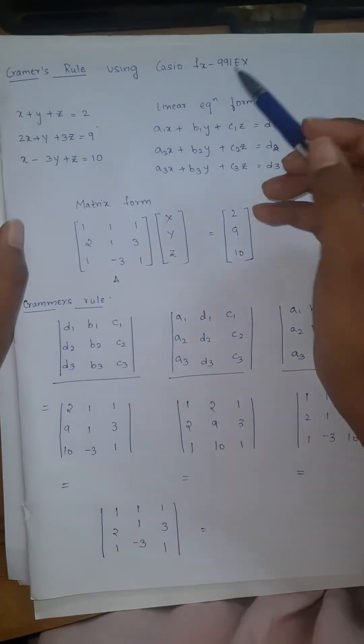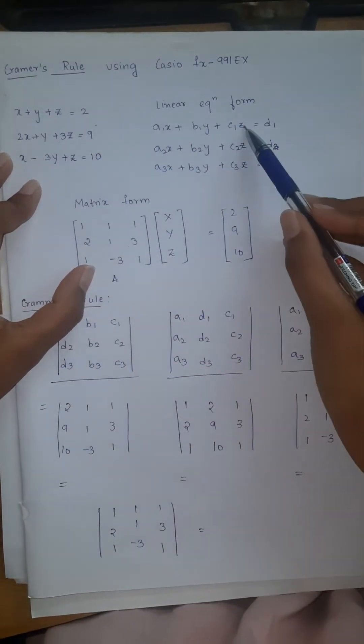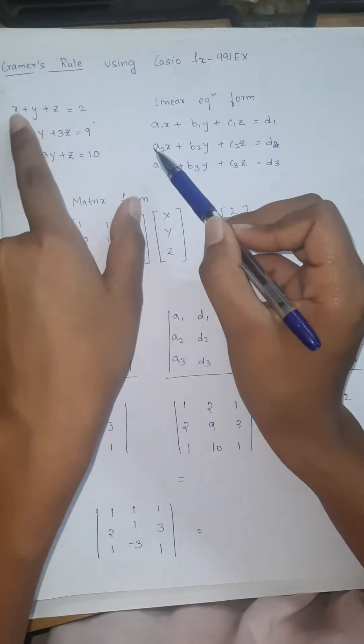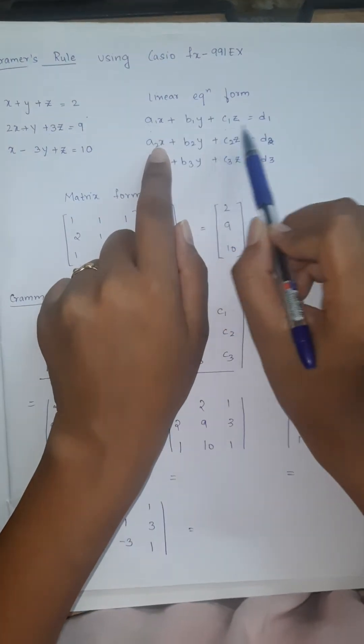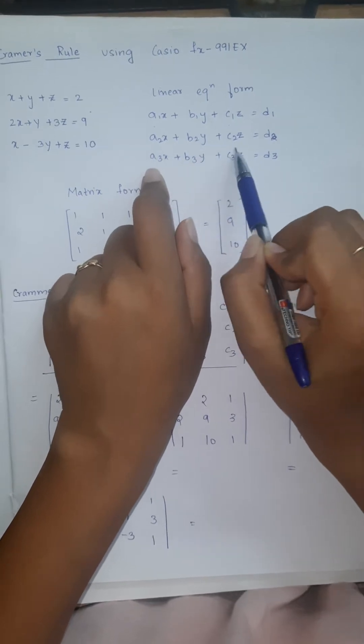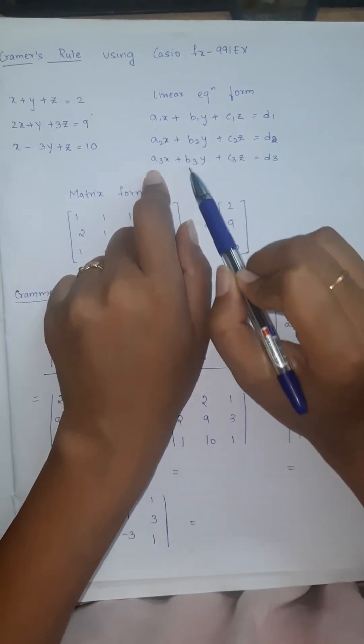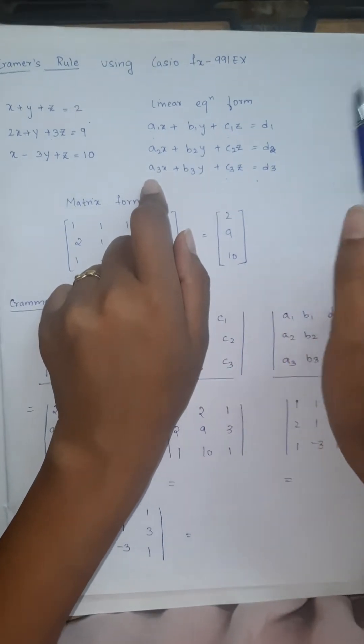First, this is the linear equation form. These equations are in the form of A1X plus B1Y plus C1Z equals D1, A2X plus B2Y plus C2Z equals D2, A3X plus B3Y plus C3Z equals D3.